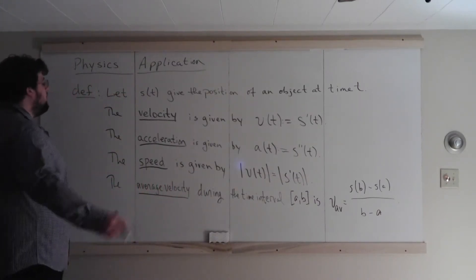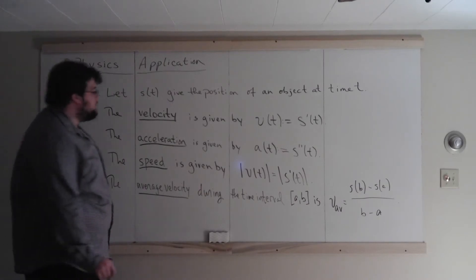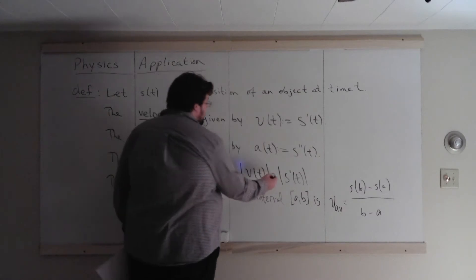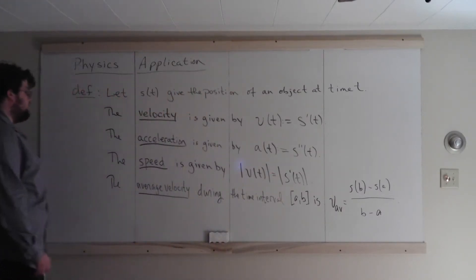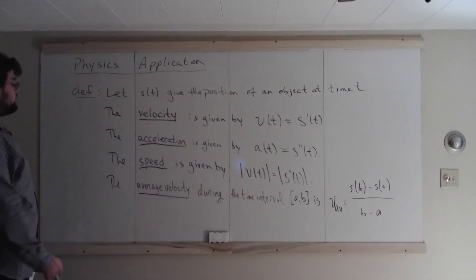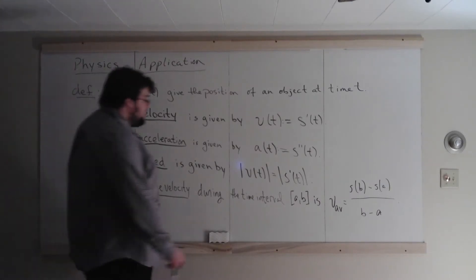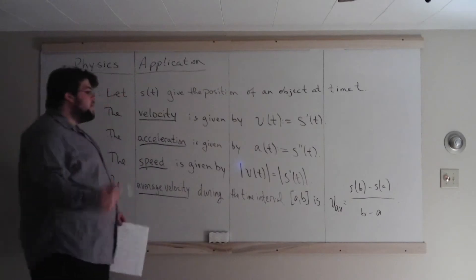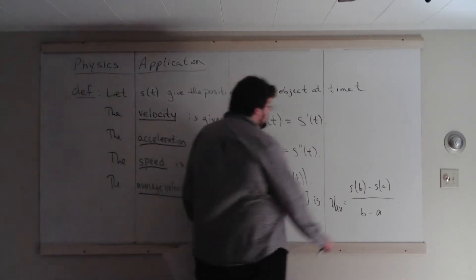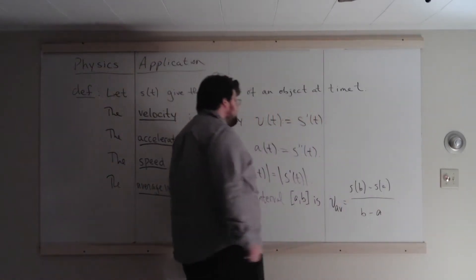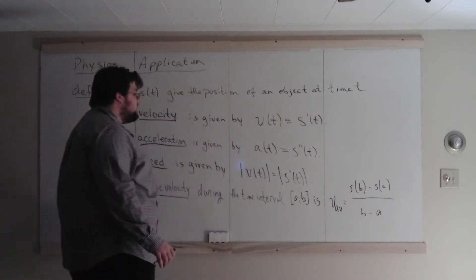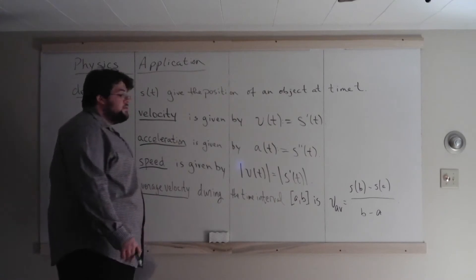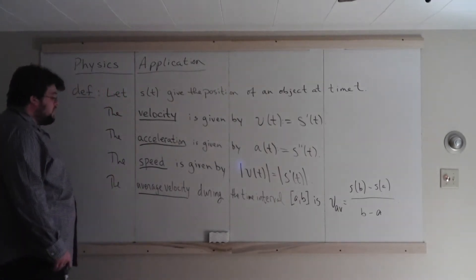The speed of the function at time t is given by the absolute value of velocity, and we can find that by taking the absolute value of the derivative. The average velocity on a time interval a to b is going to be given by s of b minus s of a, all over b minus a, which you can see as the slope of a secant line.